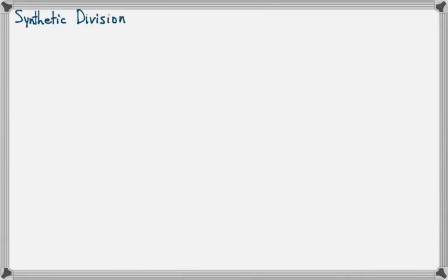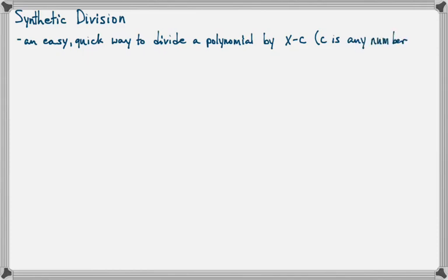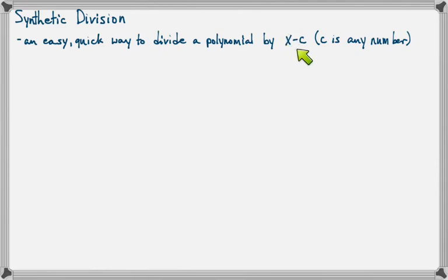In this lesson, we're going to talk about synthetic division, which is just a quick and easy way to divide a polynomial by something that looks like x minus c, where c is any number. So we're going to be dividing by a binomial, and notice that there cannot be a coefficient in front of the x, and there cannot be an exponent on the x. It just has to be two terms — a plain x and another number, and c can be any number at all.